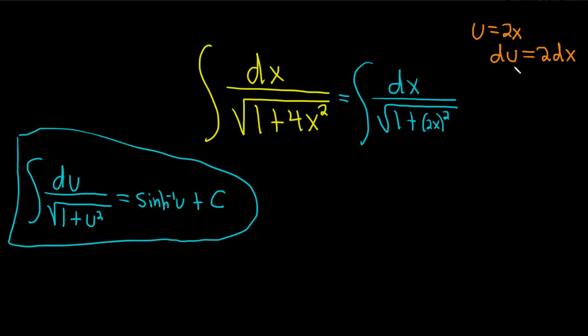And then we need to make this match what's in our integral. So we'll go ahead and divide both sides by 2. This leaves us with 1 half du equals dx.